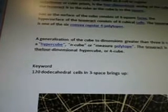A generalization of the cube to dimensions greater than three is called a hypercube, or n-cube, or measure polytope. The Tesseract is the four-dimensional hypercube, or four-cube.